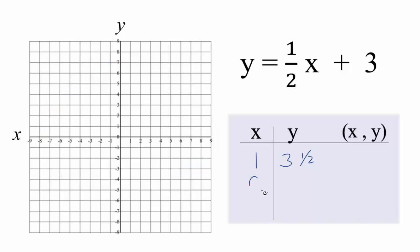So how about 0? One-half times 0, that would give us 0 plus 3, that's 3. And then negative 1: one-half times negative 1, that's negative one-half plus 3, we'll get two and a half.